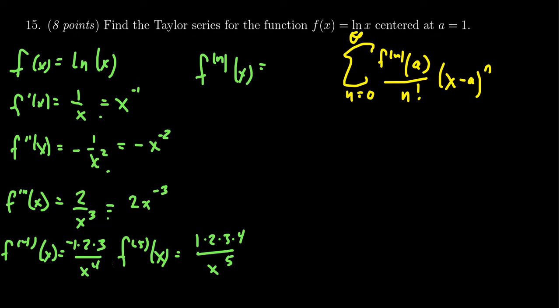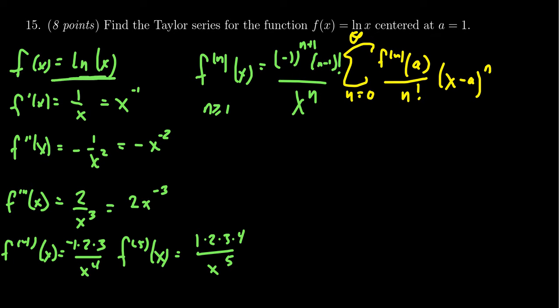The sign pattern is offset by one — when you have an odd derivative it's positive. So the sign factor is negative one to the n plus one. In the numerator there's a factorial pattern: one, two, three, four — always one less than the current derivative number, giving n minus one factorial. The denominator has x to the n. This gives the general formula for the nth derivative, valid for n greater than or equal to one, since the zeroth derivative is just the natural log.